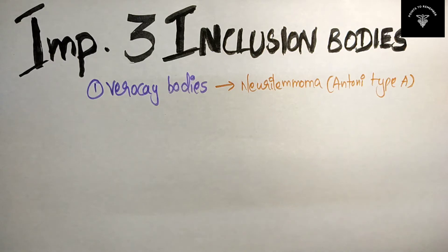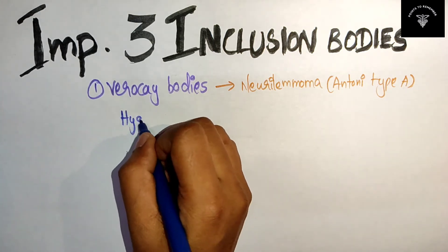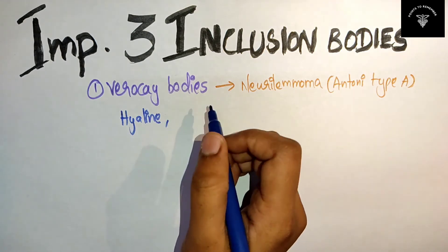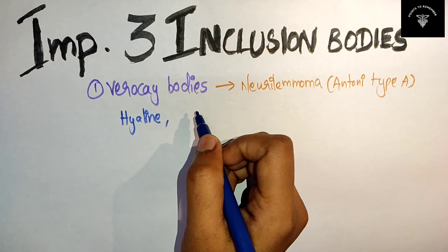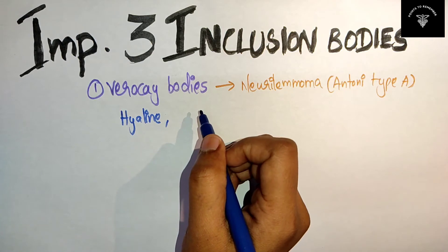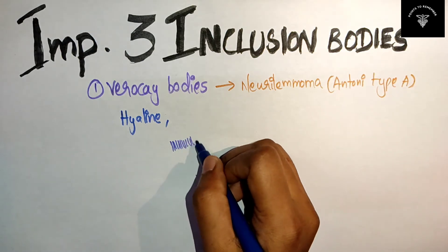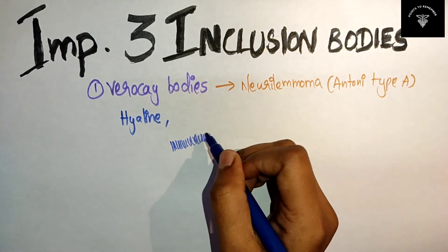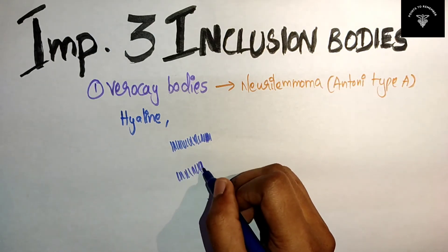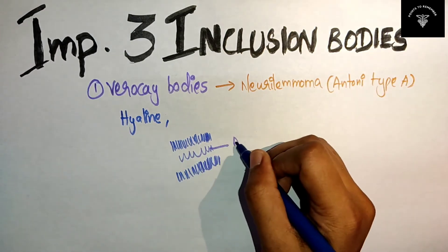Verocay bodies are small hyaline structures. They are located in the dense areas of the anuclear zone between the palisading spindle cells. Here you have the nuclear palisading on both sides, and in the middle you will have the anuclear zone.